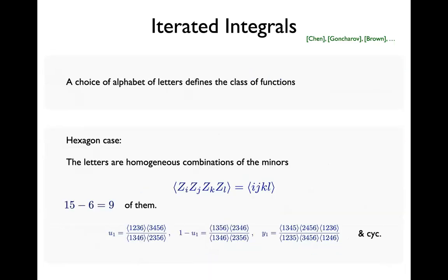The key point is that the choice of alphabet of letters defines the class of functions we're interested in. What is the alphabet relevant for our scattering amplitudes on this Grassmannian space? In the hexagon case, the letters are nothing other than those minors — the four-brackets ⟨IJKL⟩. So the symbol looks like a sequence of four-brackets tensored together, up to weight 2L for the L-loop amplitude. There are 15 such minors (six choose four), and accounting for the six projective scalings, there are nine homogeneous combinations — the singularities appearing in these polylogs.